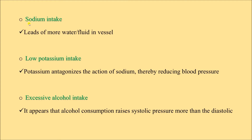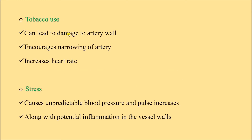Potassium antagonizes the action of sodium, so potassium intake reduces blood pressure. Excessive alcohol intake may raise systolic blood pressure more than diastolic. Tobacco use damages the artery wall, which is a common predisposing factor for atherosclerosis, leading to narrowing of arteries and increased heart rate. Stress causes unpredictable blood pressure and pulse increases, along with potential inflammation in the vessel wall, which also increases the chance of atherosclerosis, narrowing of arteries, and hypertension.